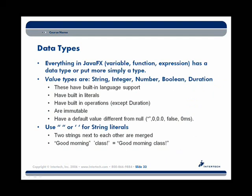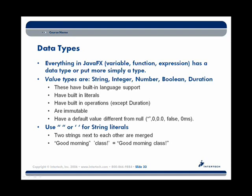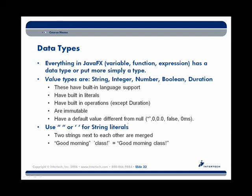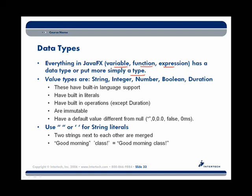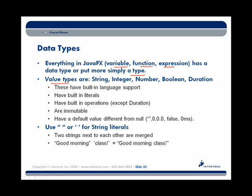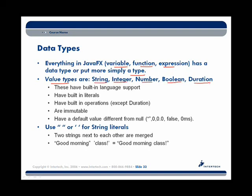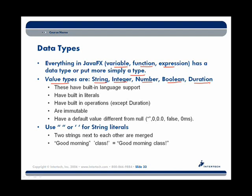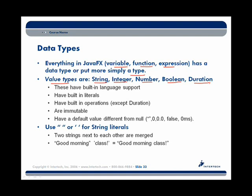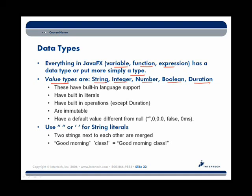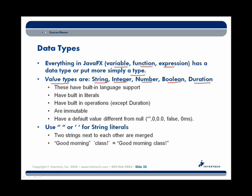Everything in JavaFX has a data type, or more simply, just a type. Most people refer to JavaFX Script as just plain old JavaFX. That includes variables, functions, and even expressions. There are some value types — a kind of subset of all types in JavaFX. Value types are either String, Integer, Number, Boolean, or Duration. Those of us in the Java community might see those as similar to primitives, though not entirely. For example, String is in that list along with Integer and Number. These value types are simpler than Java's primitives, which include things like double and float.